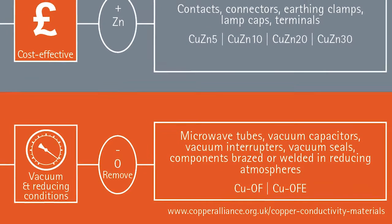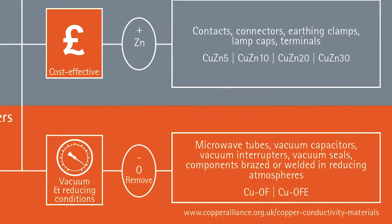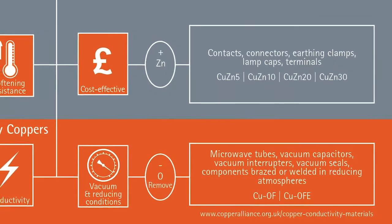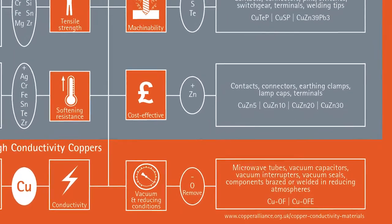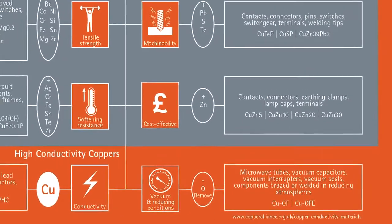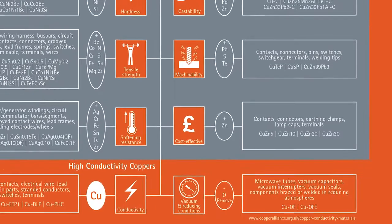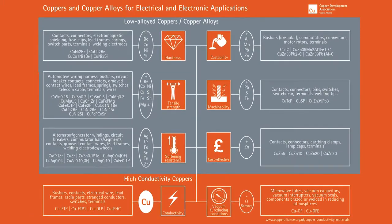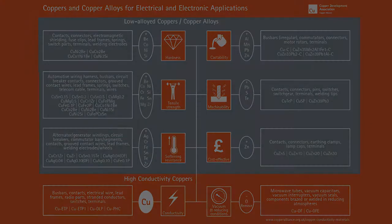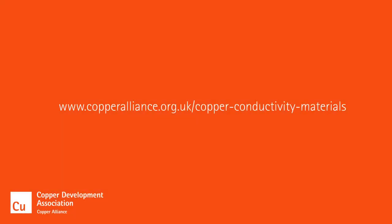This was a brief introduction to the range of property combinations available among copper-based conductivity materials, offering choices to meet the manufacturing, operating, and efficiency requirements of all electrical and electronic applications. These materials are readily available in a range of product forms and are fully recyclable when products reach the end of their lives.